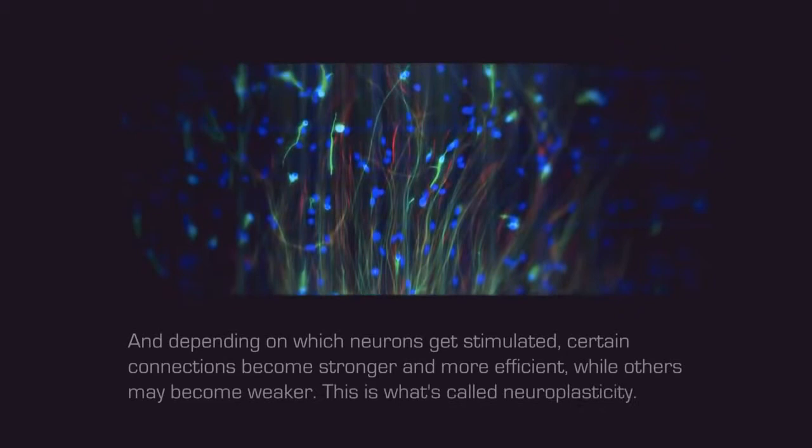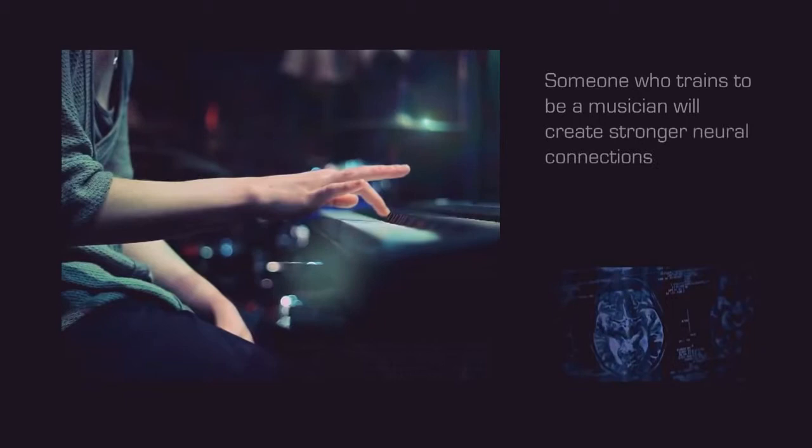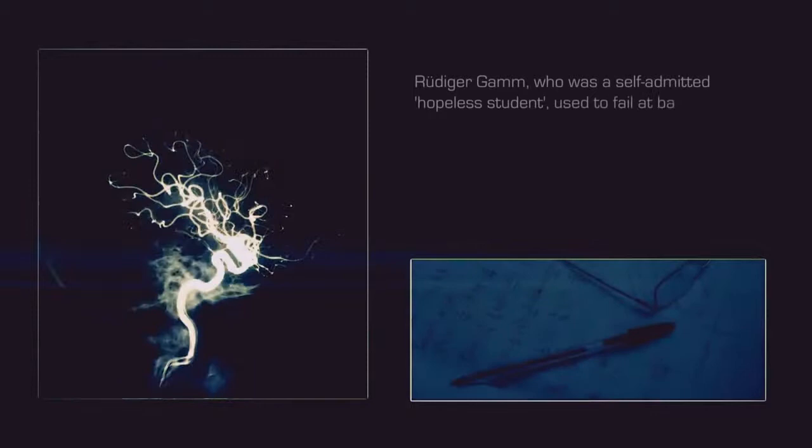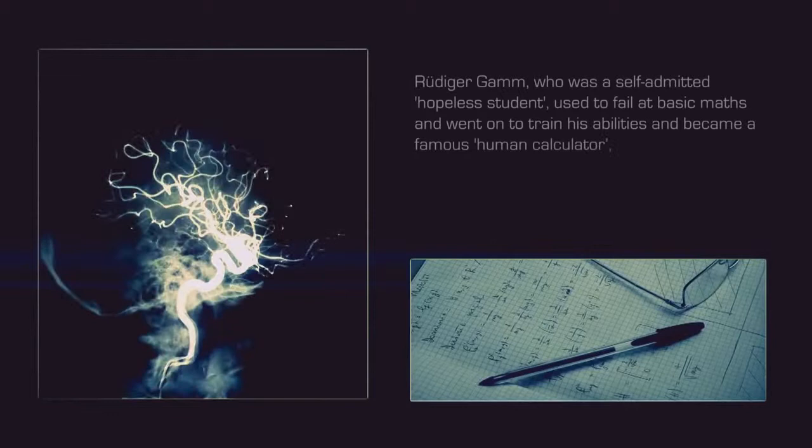Someone who trains to be a musician will create stronger neural connections that link the two hemispheres of the brain in order to be musically creative. Virtually any sort of talent or skill can be created through training. Rüdiger Gamm, who was a self-admitted hopeless student, used to fail at basic math and went on to train his abilities and became a famous human calculator capable of performing extremely complex mathematics.